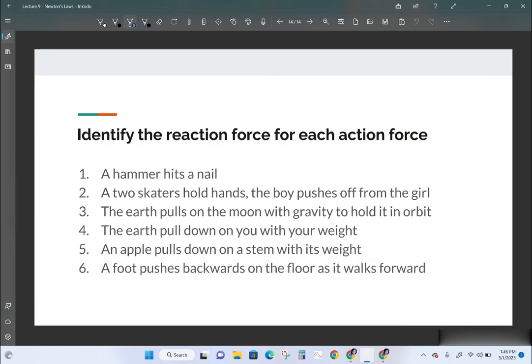Let's talk about a few others. A hammer hits a nail. So the action would be the hammer hitting the nail. And the reaction would be the nail hitting equal and opposite on the hammer. So think about if you just slap your hand on the table. You could break your hand. And that's not because it's pushing harder on your hand than you push on it. It's because your hand just can't handle it. Consider two skaters holding hands and they push off from each other. The boy pushes on the girl and the girl pushes equal and opposite on him. The bigger one will have less acceleration. The earth pulls on the moon to hold it in orbit. So the moon pulls on the earth. The earth pulls down on you with your weight. So you pull back on the earth with your weight.